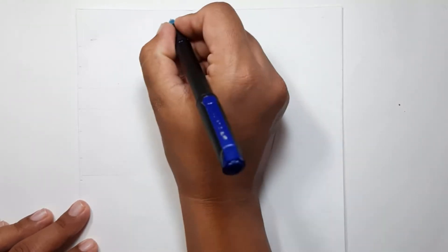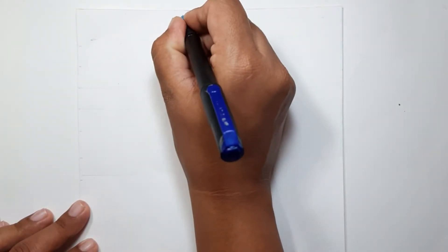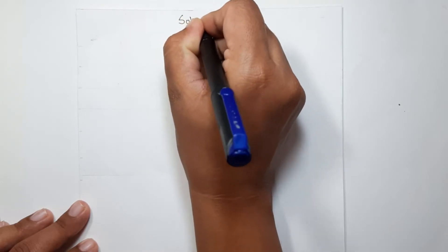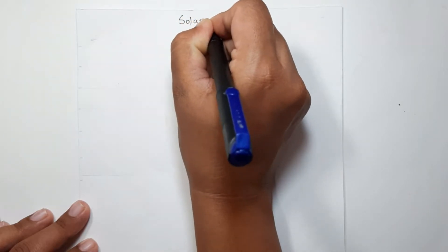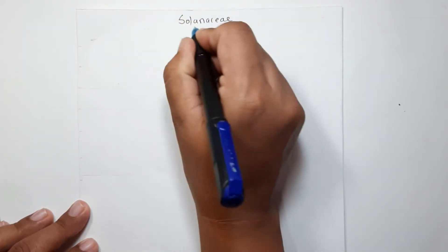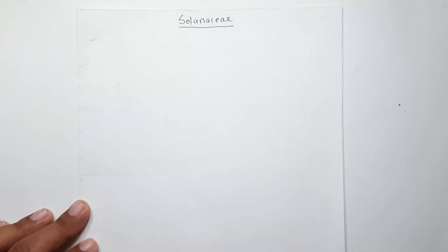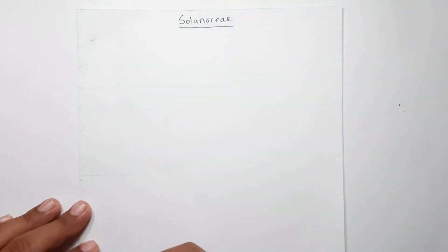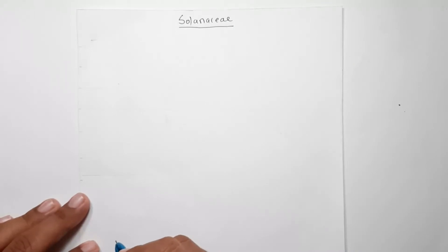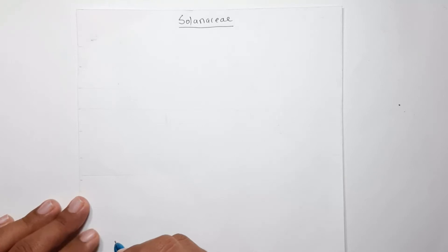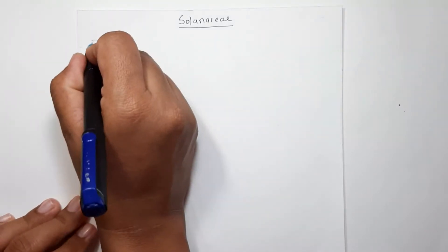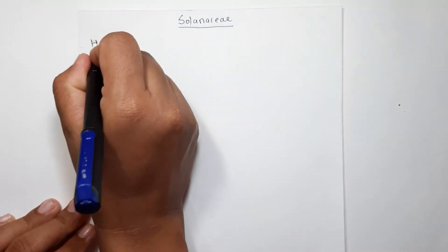Today we are going to learn about the family Solanaceae — the morphology of the Solanaceae family. The terminology used for the description of the flowering plant or the family we had already learned previously, so let's start with the habit.